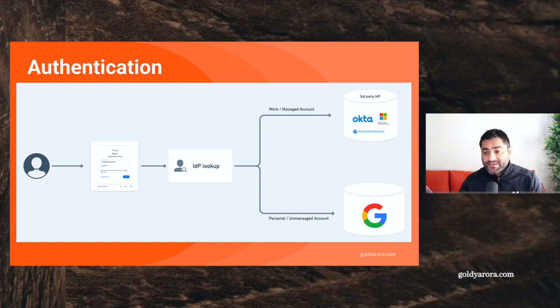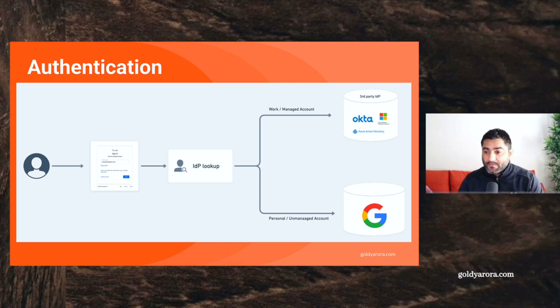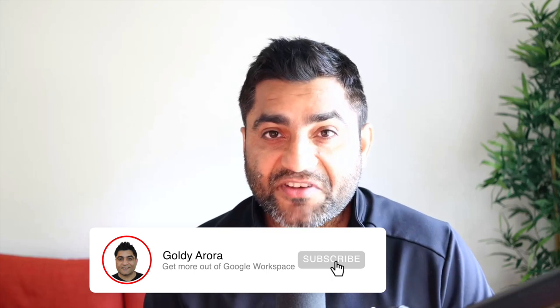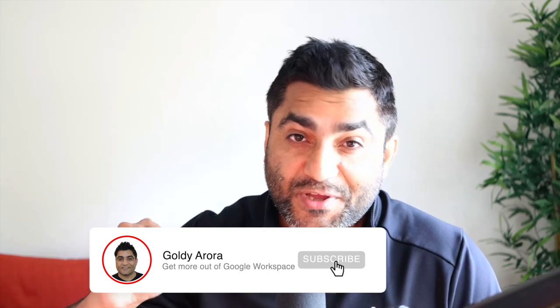If those users are trying to log in with their personal or unmanaged accounts, they will go to Google as their identity provider, because they are not a work account and should not be redirected to the third-party IdP. I hope this was helpful, especially if you're dealing with conflicting accounts and have a third-party identity provider configured with your Google Cloud Identity or Google Workspace. If you have any questions, comments, or feedback, please put them under this video and I'll be happy to collaborate — thank you so much.